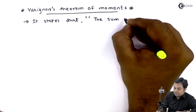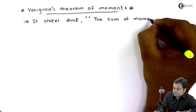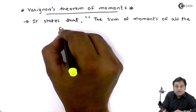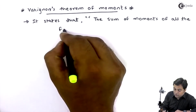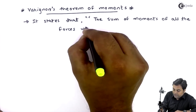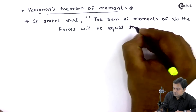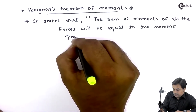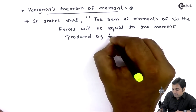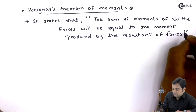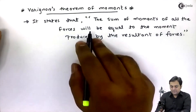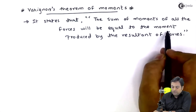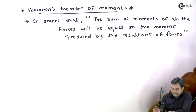Varignon's theorem of moments states that the sum of moments of all the forces — if we consider more than one force — will be equal to the moment produced by the resultant of those forces.